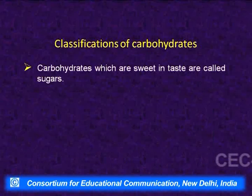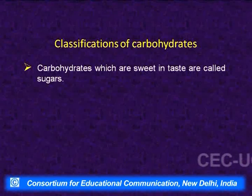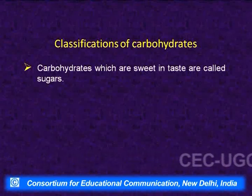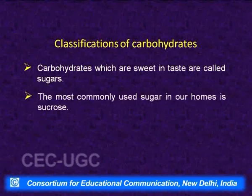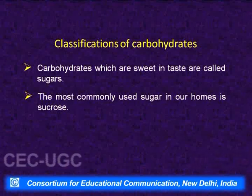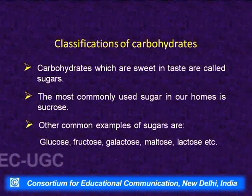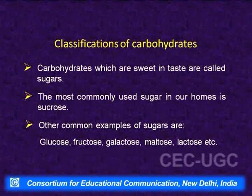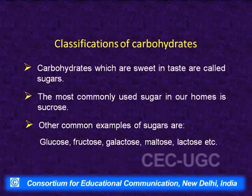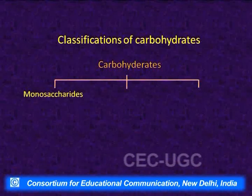Carbohydrates are classified in different ways. One of the oldest and simplest ways is according to taste: sweet carbohydrates are called sugars, and non-sweet ones are called non-sugars. Common sugars include sucrose (table sugar), glucose, fructose, galactose, maltose, and lactose. Non-sugars include starch, cellulose, and gums — these are not sweet in taste.